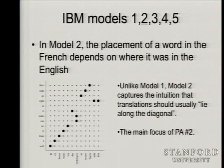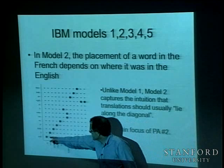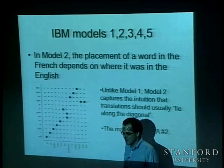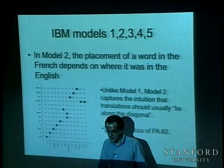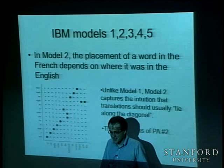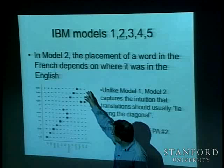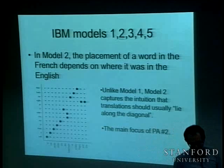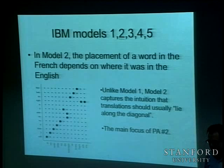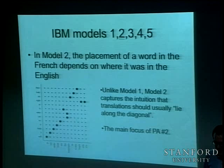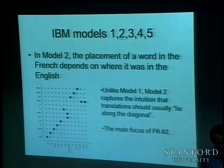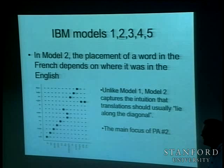The idea of the IBM models is to make further refinements to the probability models that make them more complex but also do a slightly better job at modeling how human languages work. If you look at human languages as translations, alignment grids commonly look like they go along the diagonal, reflecting the fact that different languages put words in different orders. For language pairs with similar typology like French-English, you get a very strong diagonal effect. There are some languages with very different word orders — English has subject-verb-object while some have completely opposite object-verb-subject order — and the diagonal effect becomes less strong.